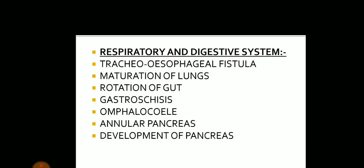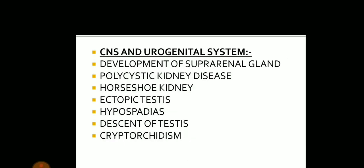Moving on to the respiratory and digestive system, questions come on tracheoesophageal fistula, which is very important. Maturation of lung is not that important. Rotation of gut is also important. Gastroschisis and omphalocele are lesser important questions. Annular pancreas and the development of pancreas are two very important questions.